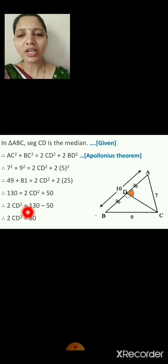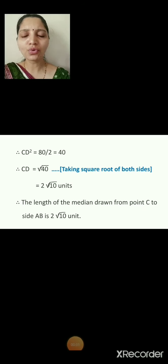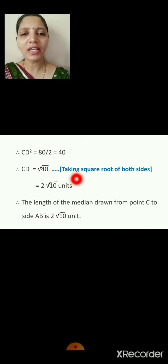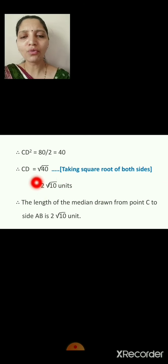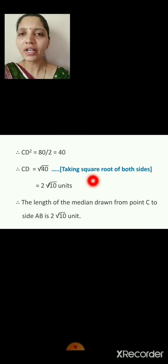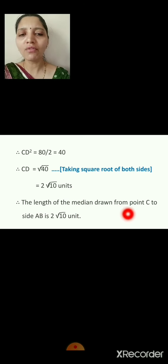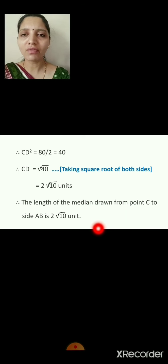Therefore CD² = 80/2 = 40, so CD = √40 = √(4×10) = 2√10 units (taking square root of both sides). The length of the median drawn from point C to side AB is 2√10 units.